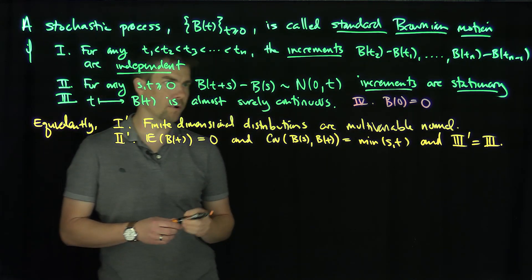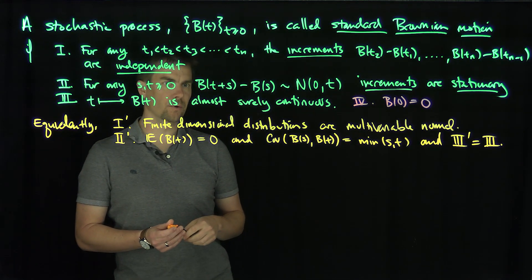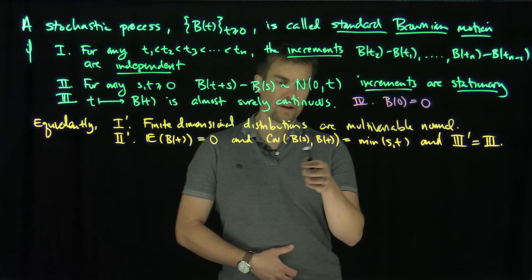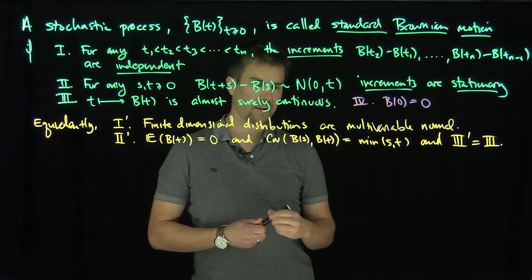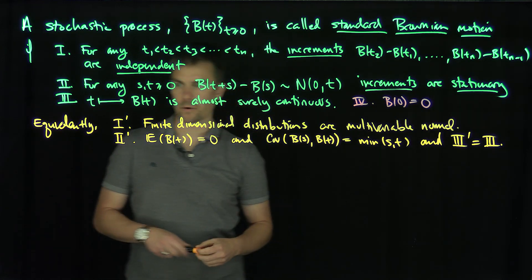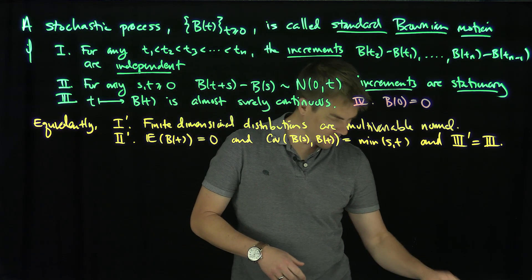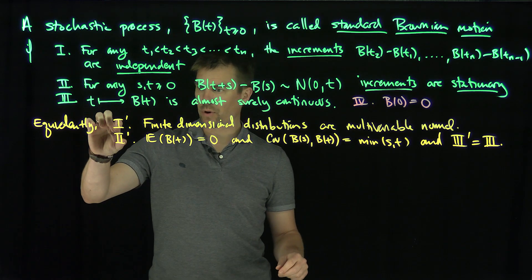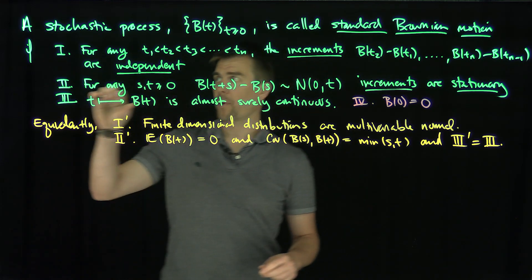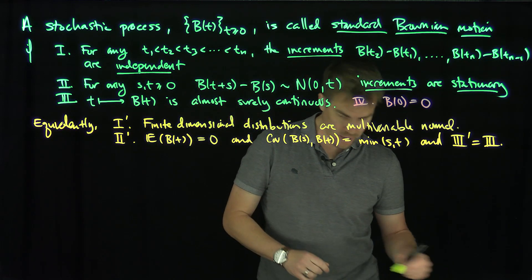So this is an alternative definition. We can see why this has to be true: since the expected value is zero, you can check this easily. We'll verify it further along the way. We're going to use conditions one prime and two prime in the construction process, and we'll always reference conditions one, two, and three when actually proving properties.